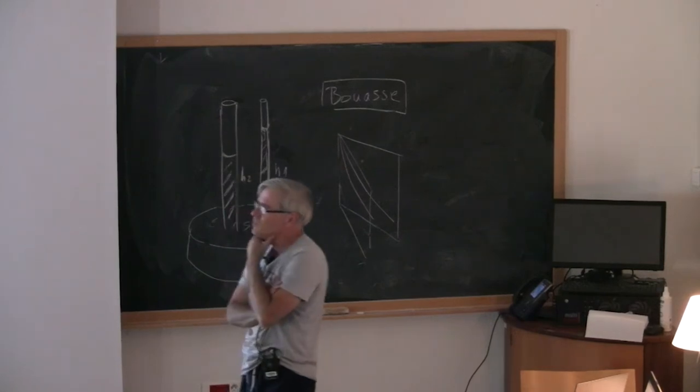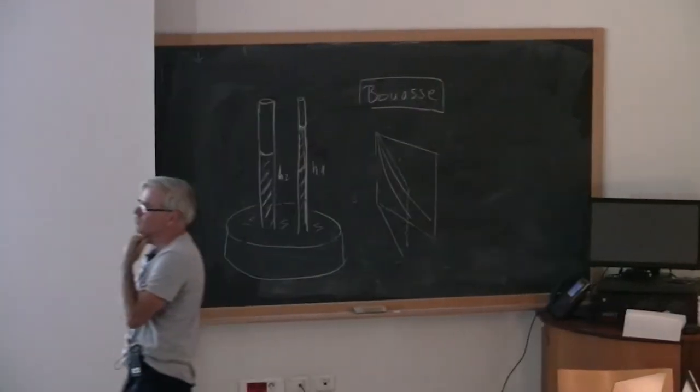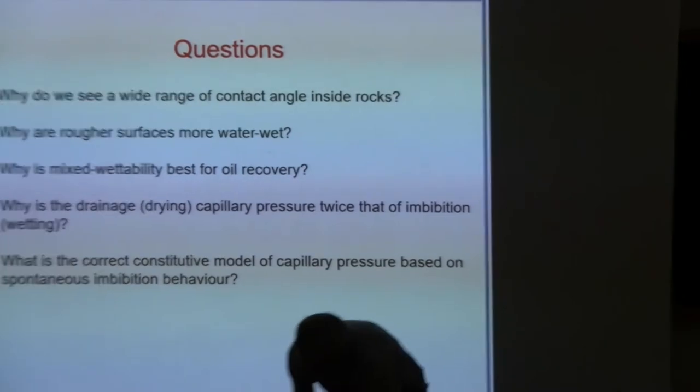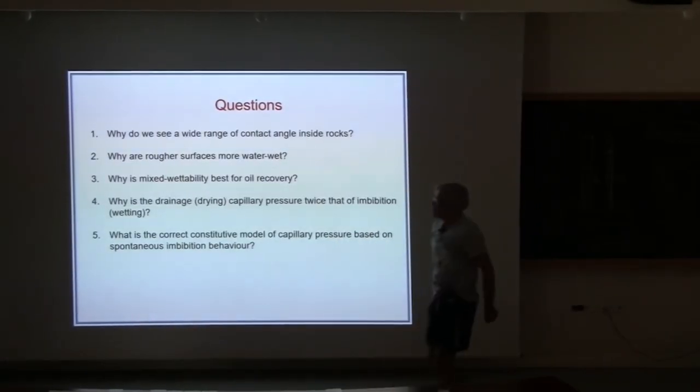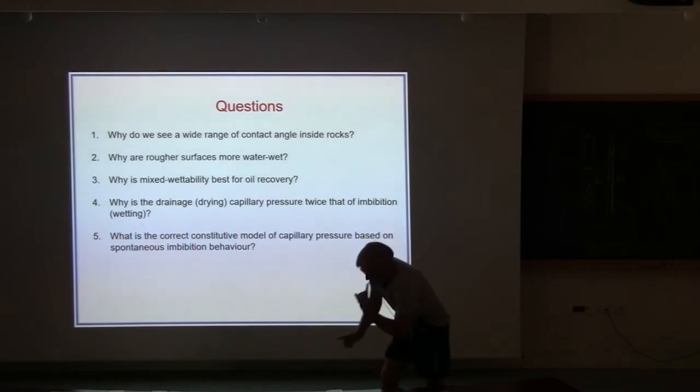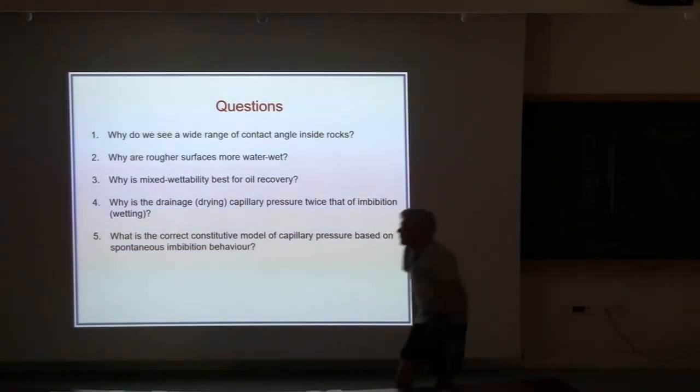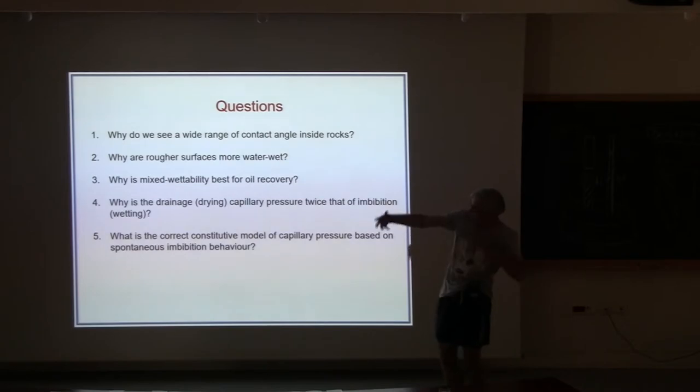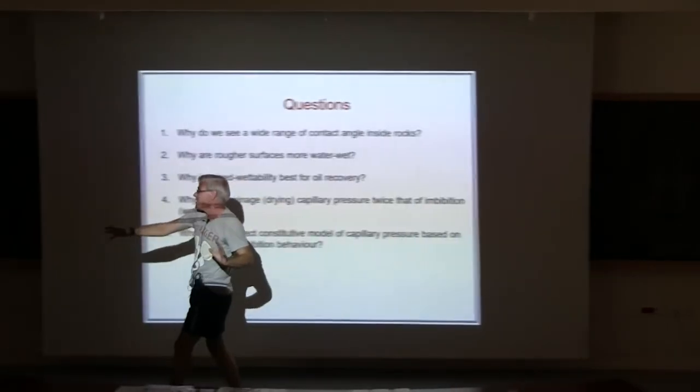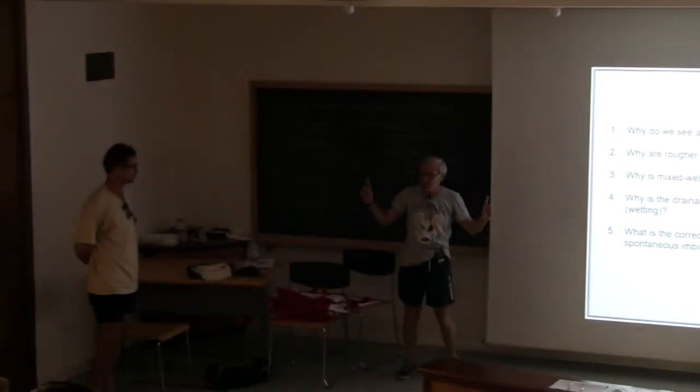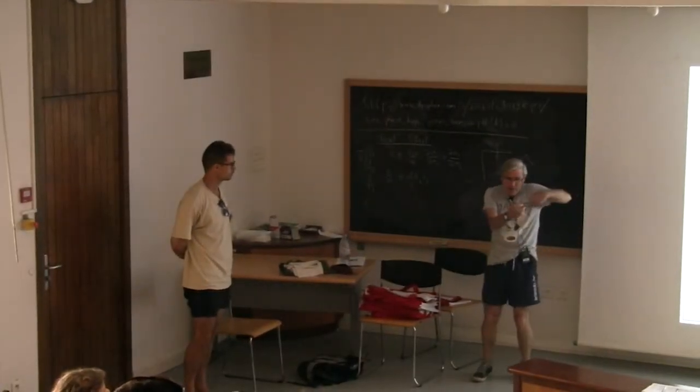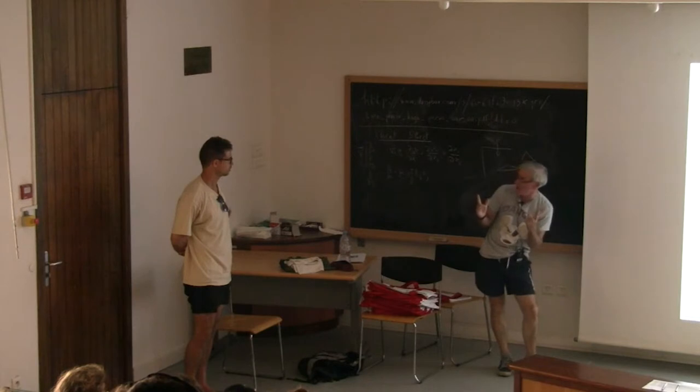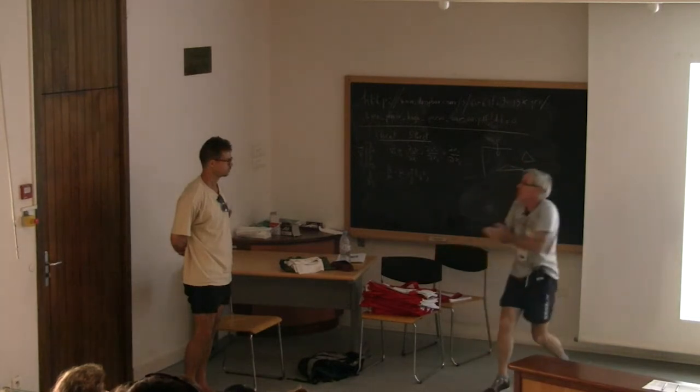Question: You mentioned that a third of the CO2 gets trapped. What about the other two thirds? The other two thirds moves. You're right. But then it keeps moving. It doesn't move that far. What happens is you get this plume of CO2 deep underground extending many kilometers. As it moves it leaves behind this trail of trapped CO2 and eventually it stops moving. So that's the idea. You can work out at the macro scale how far the CO2 will move before it's all trapped.